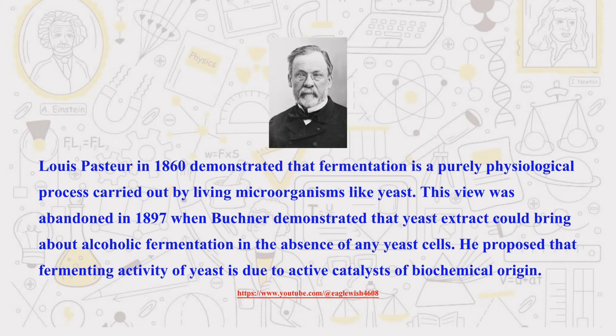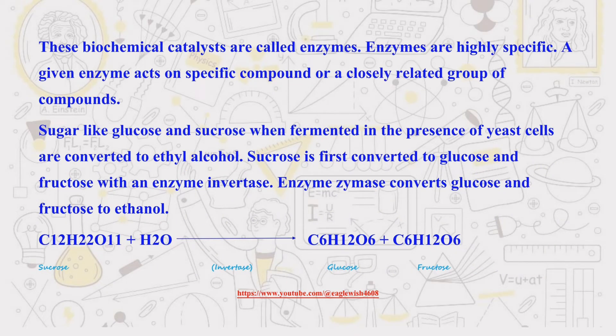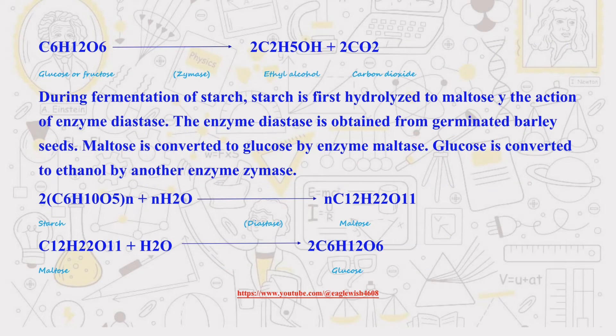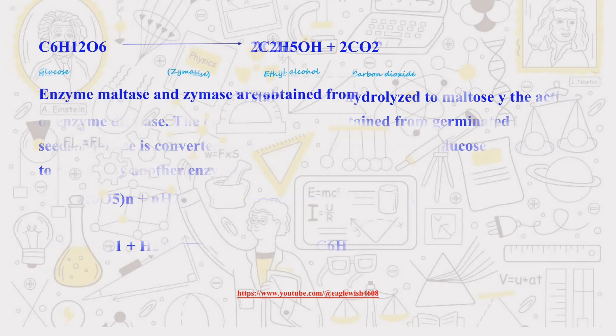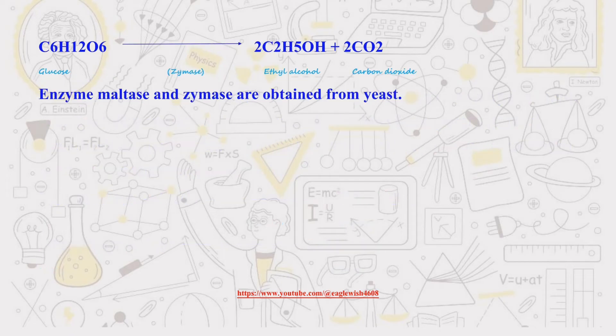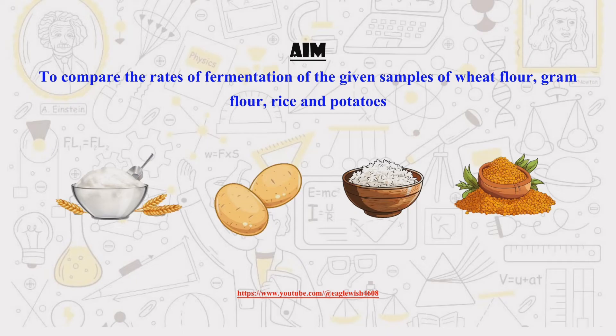Additionally, Louis Pasteur's research in 1890 yielded the first scientific evidence of fermentation, significantly advancing our understanding of the process. The primary objective of this study was to quantitatively compare the fermentation rates of potato, wheat flour, gram flour, and rice.